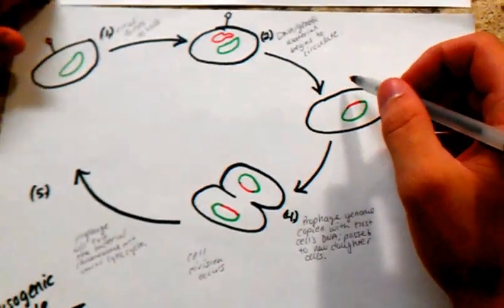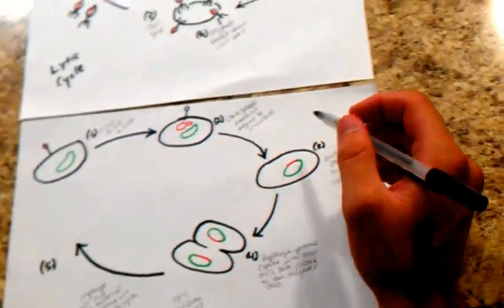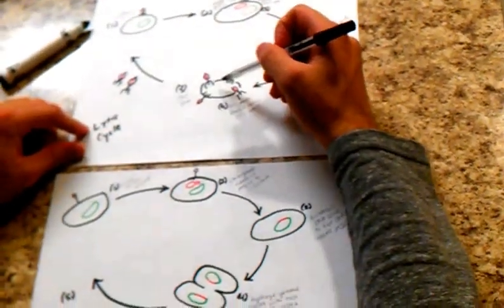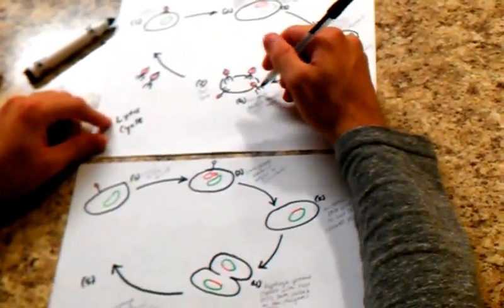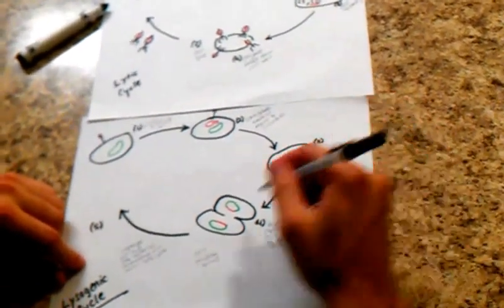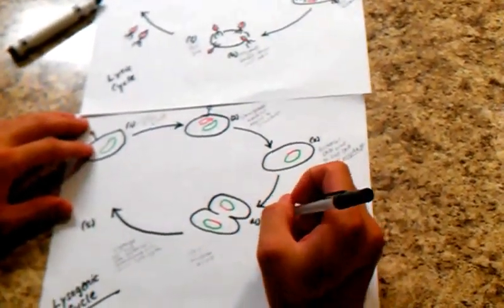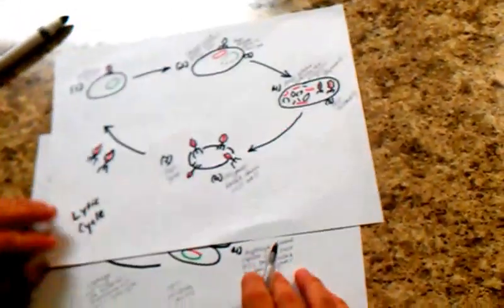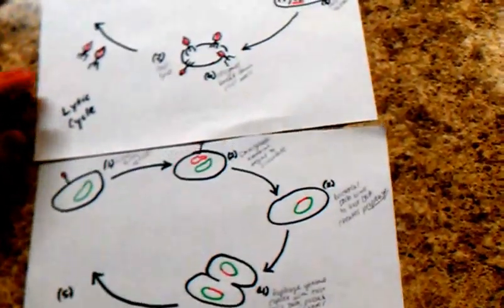Now, the main differences between the lytic cycle and the lysogenic cycle are that in the lytic cycle, after everything's been done, the bacterial host is destroyed. However, in the lysogenic cycle, the bacterial host is not destroyed. And that is the lytic and lysogenic cycle.